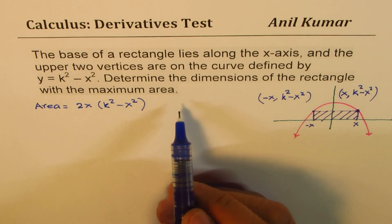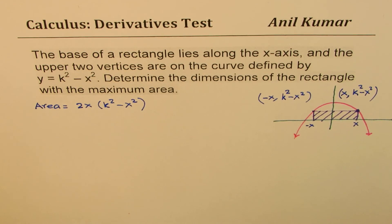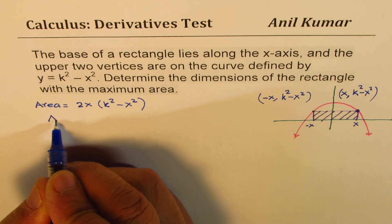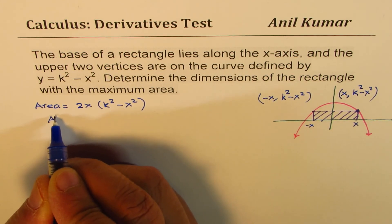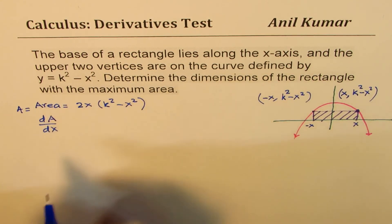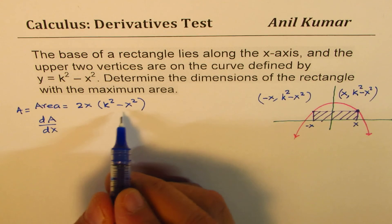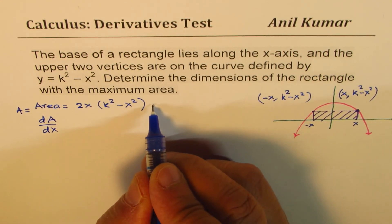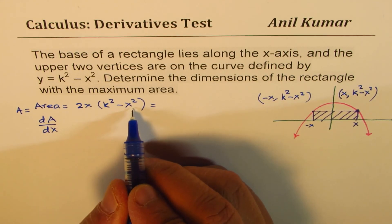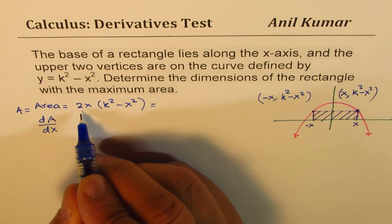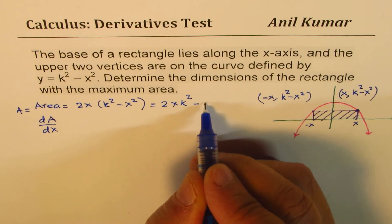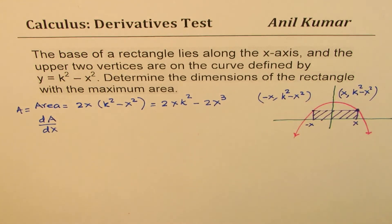To find or to maximize the area, what can we do? We can find the derivative. So we have area as a function of x. We can find its derivative. That is dA over dx. Let's say this is area A. Differentiating with respect to x, I feel more comfortable by expanding it first and then we'll do the derivative. Otherwise, we may have to apply the product rule. So let's avoid it. So we have 2xk squared minus 2x cubed.